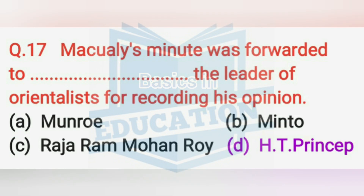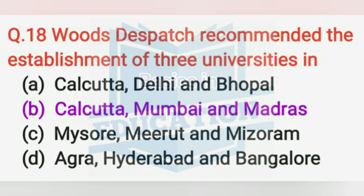Macaulay's minute was forwarded to H.D. Prinsep, the leader of the Orientalists, for recording his opinion. Wood's Dispatch recommended the establishment of three universities in Kolkata, Bombay, and Madras.